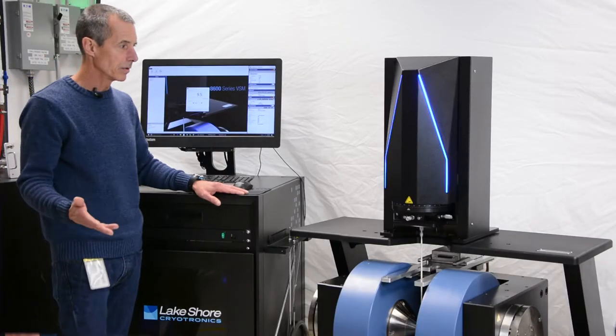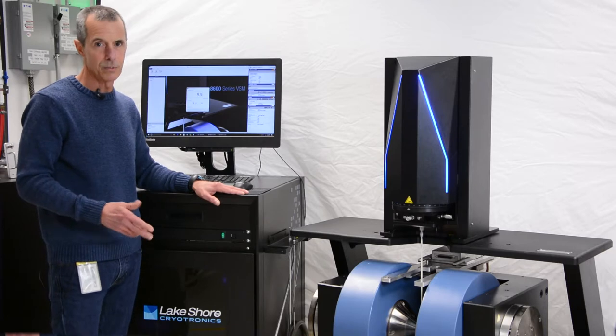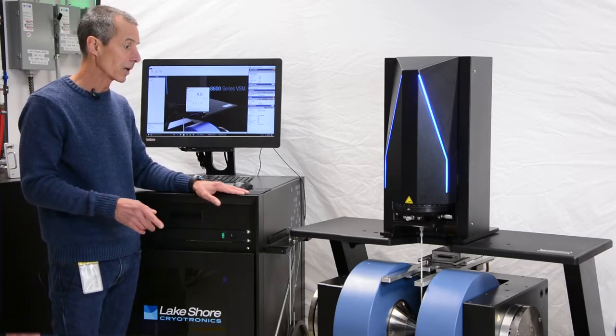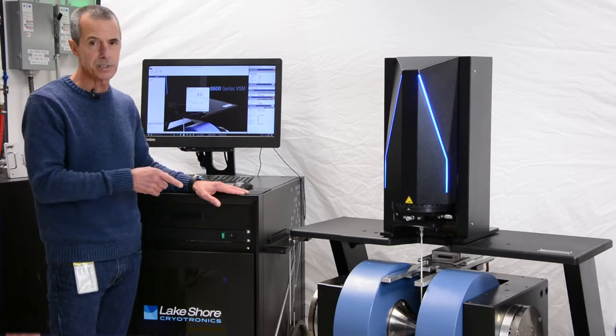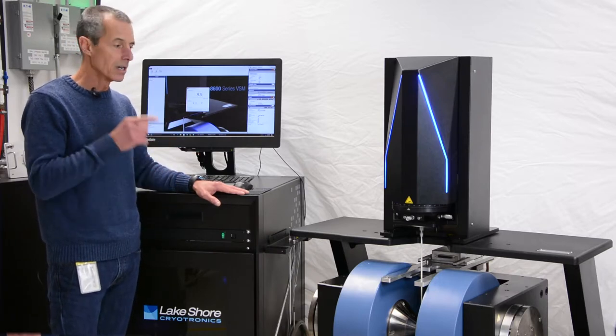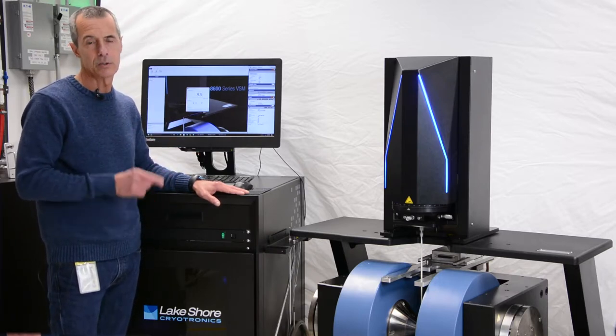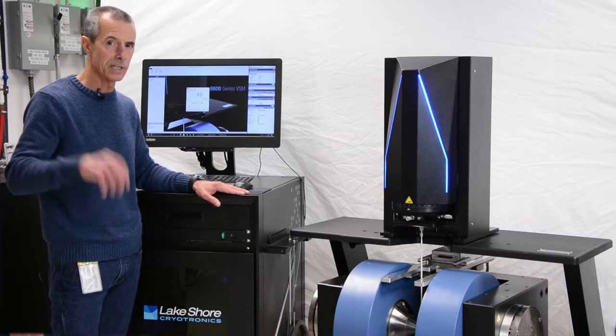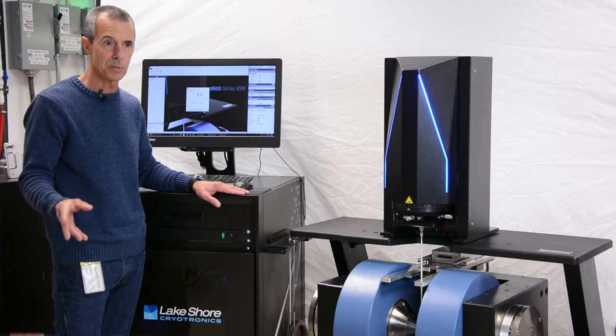So in addition to its very high sensitivity, 25 nano EMU RMS noise at 10 seconds per point averaging, this VSM system has also been designed to be very fast. We can sweep the field as quickly as 10 kilo ersted per second and record data as quickly as 10 milliseconds per point.